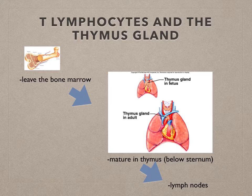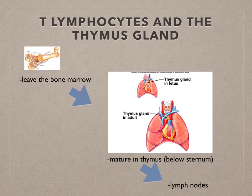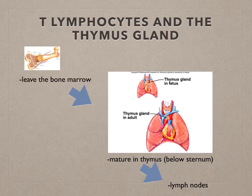The name for T lymphocytes is actually thymus-derived lymphocytes. They are the T killer cells and the T helper cells. They're produced in stem cells before birth in the bone marrow, then leave the bone marrow and move to the thymus gland. They mature in the thymus gland, and then leave to go to the lymph nodes, spleen, or circulate around the body.